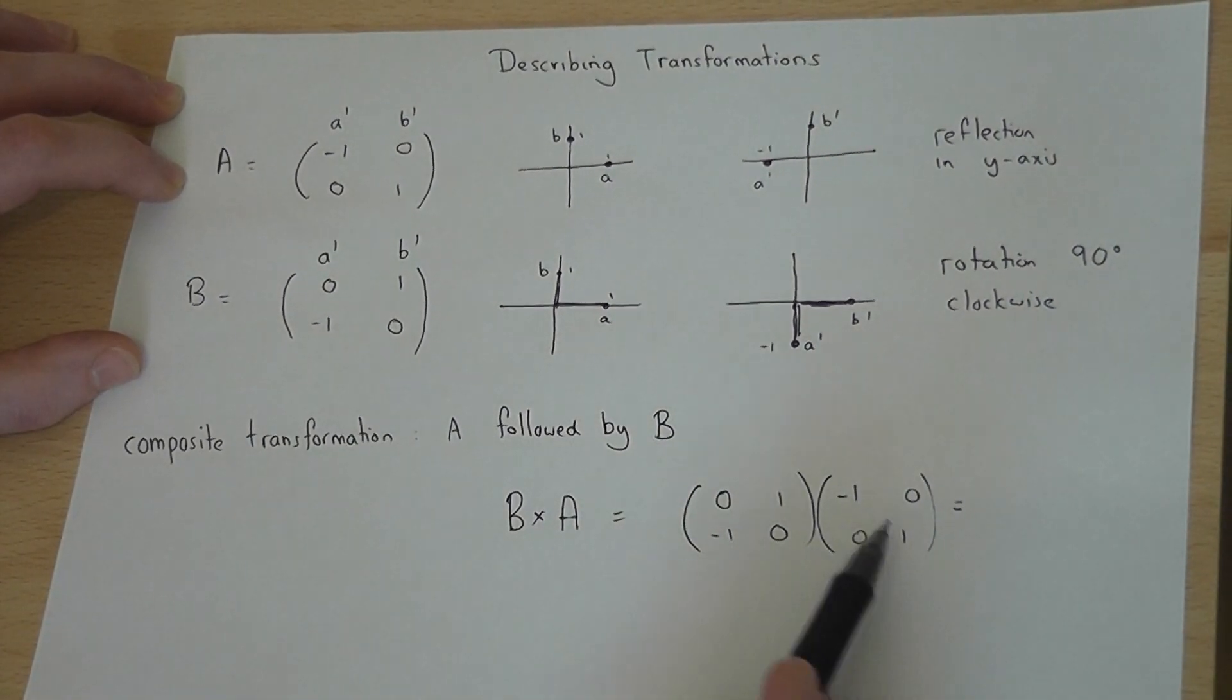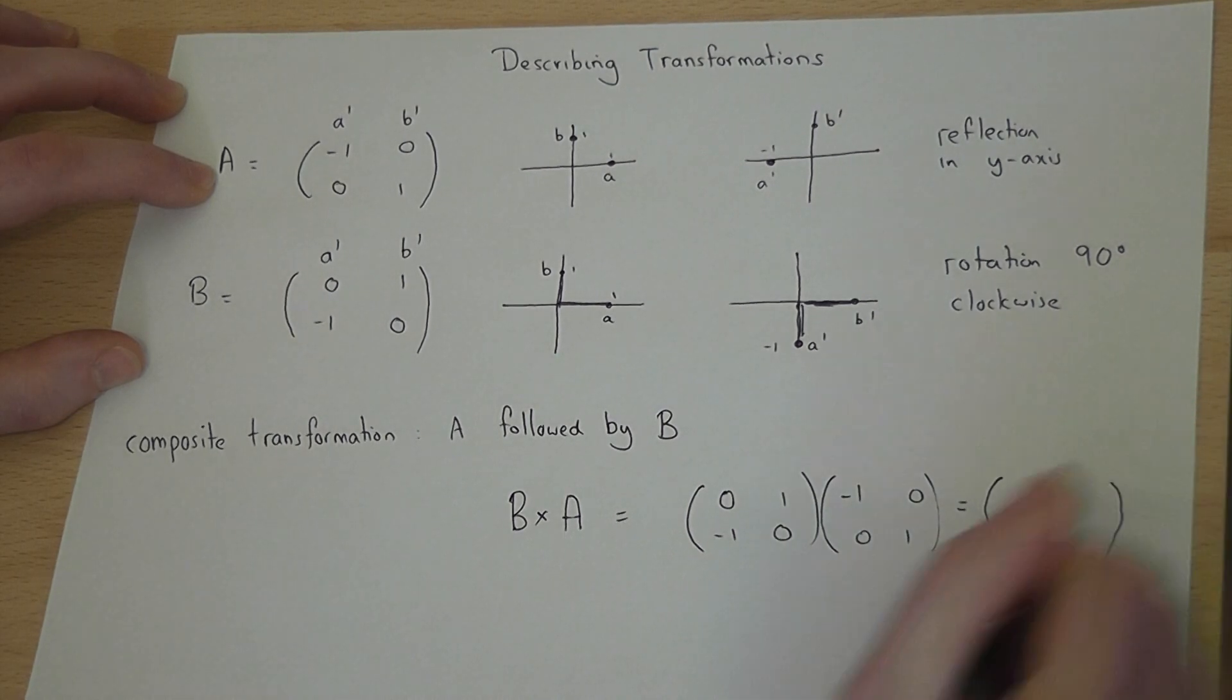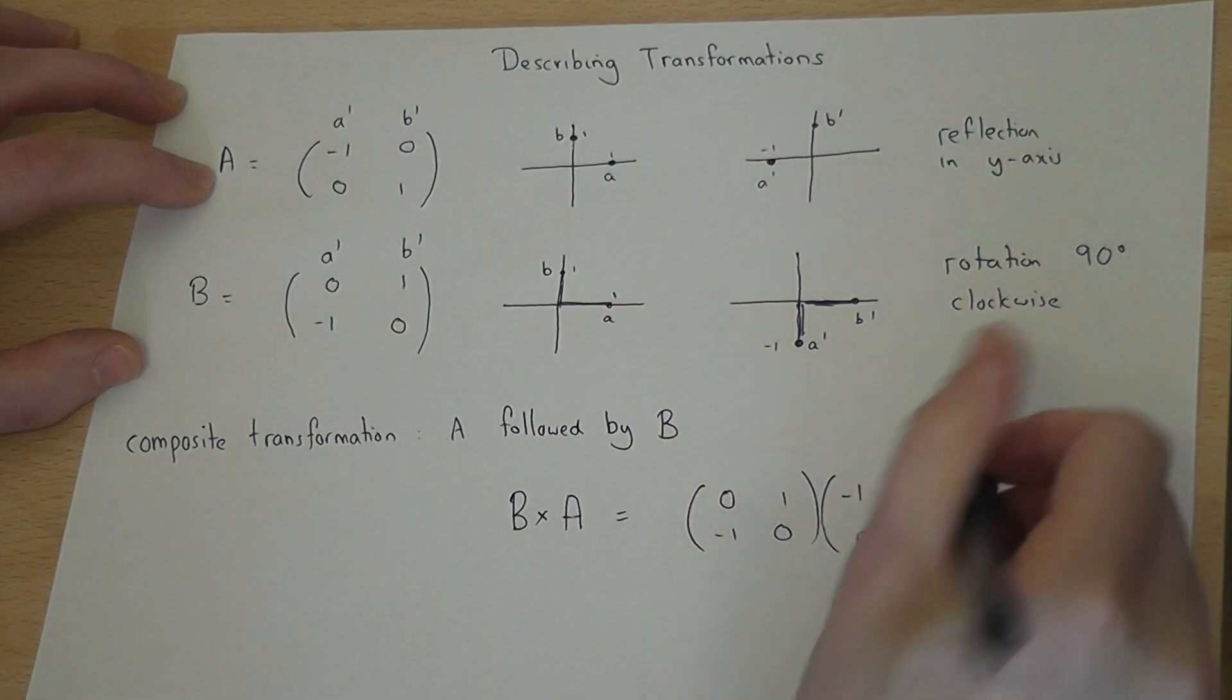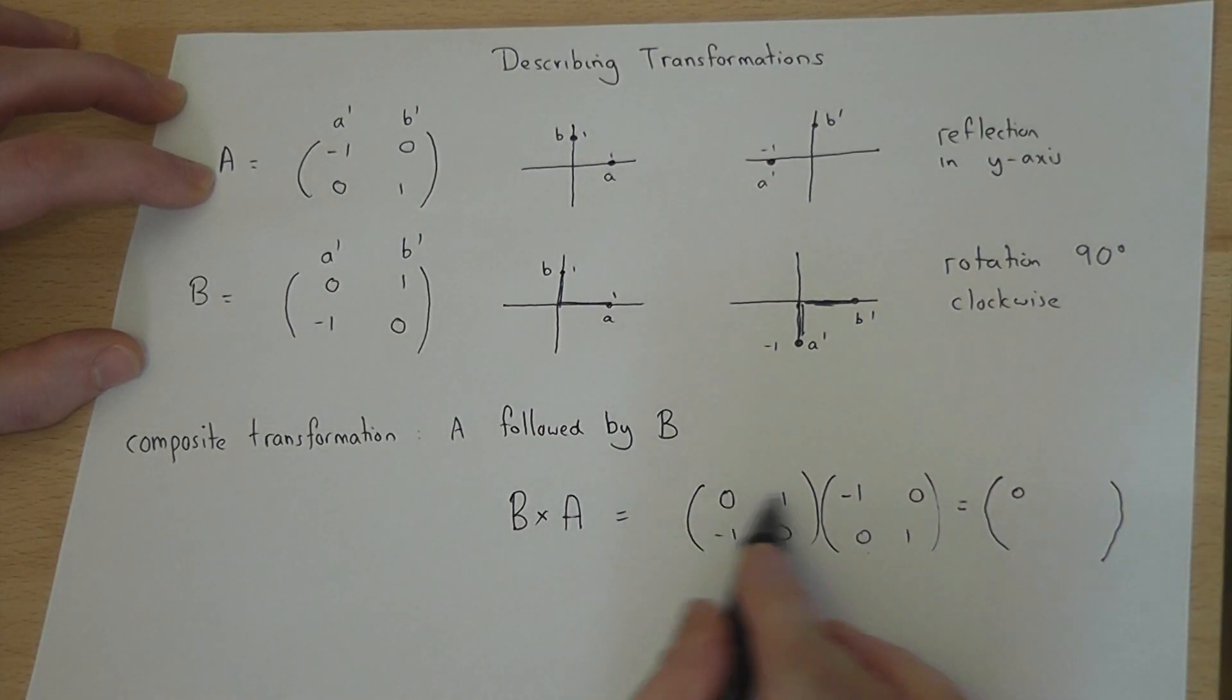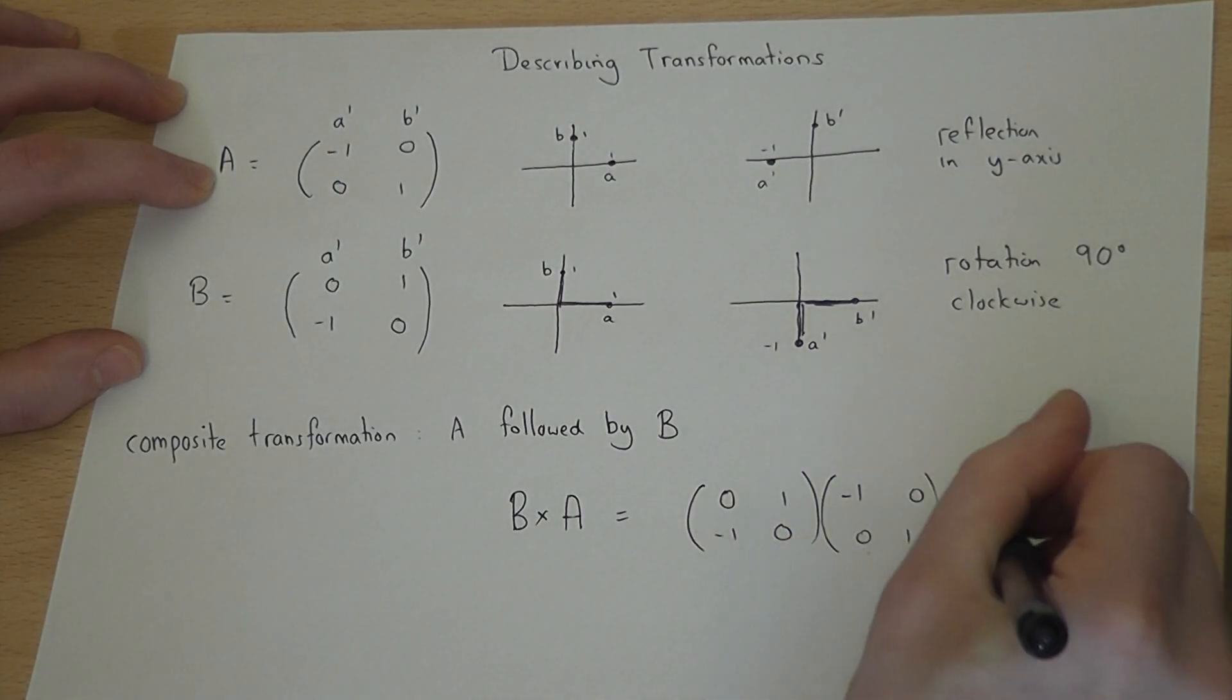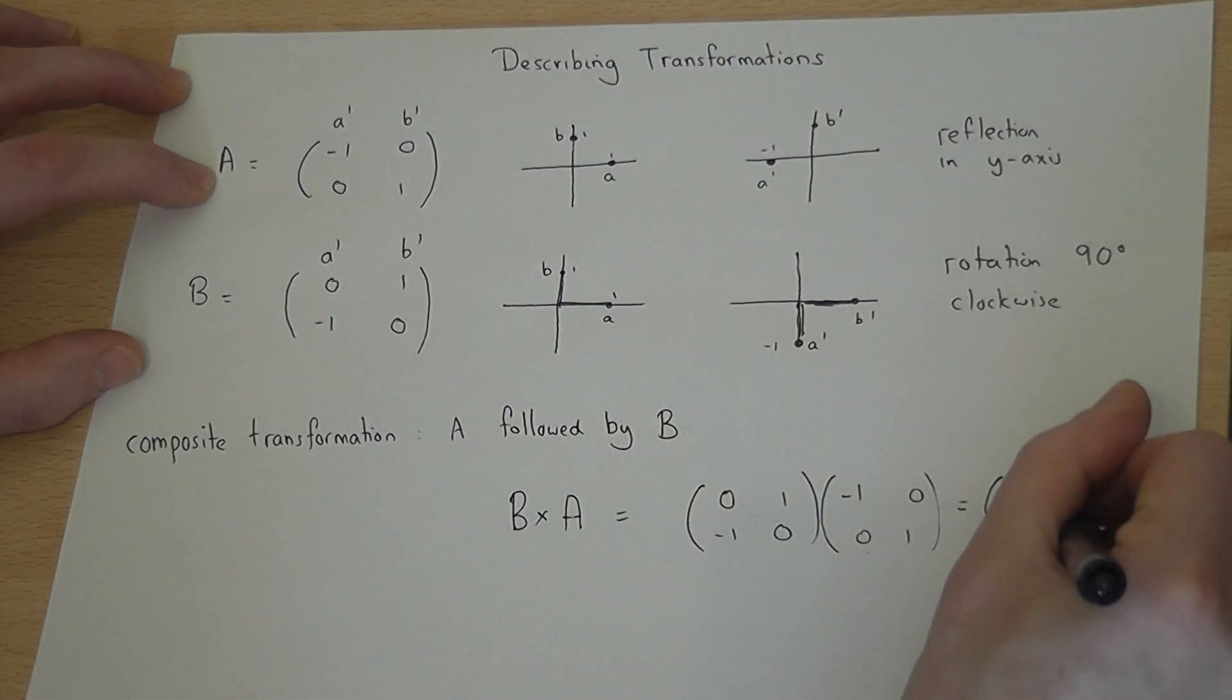So if we times together those two matrices, we get the single transformation which represents that. So 0 times minus 1 and 1 times 0 is 0. 0 times 0, 1 times 1 is 1. Minus 1 times minus 1, 0 times 0 is 1. And minus 1 times 0, 0 times 1 is 0.